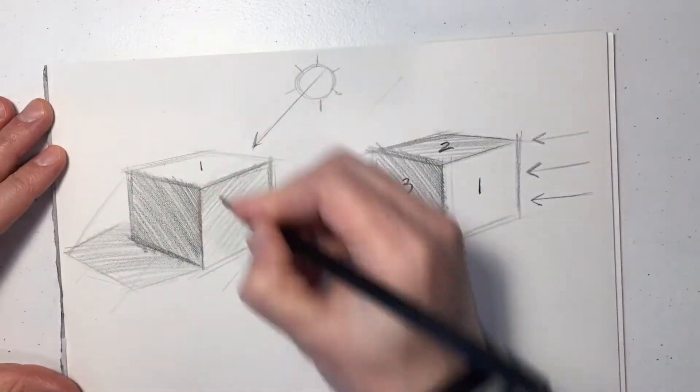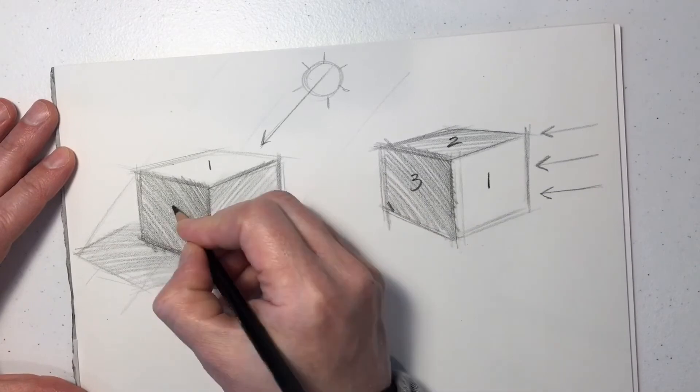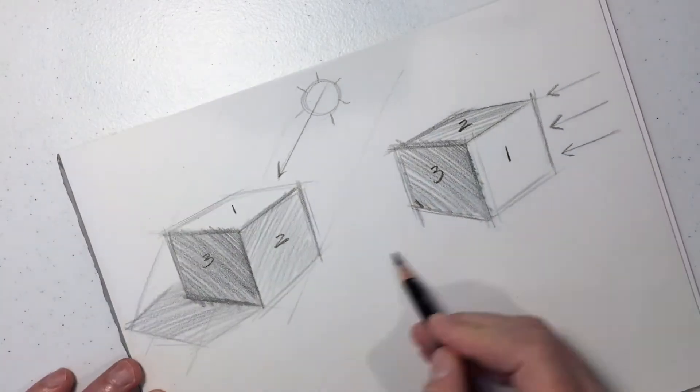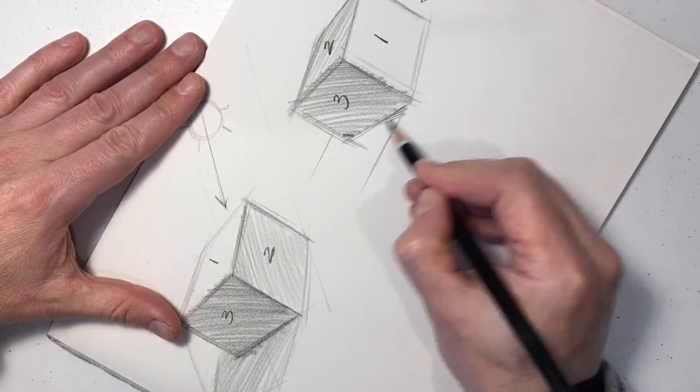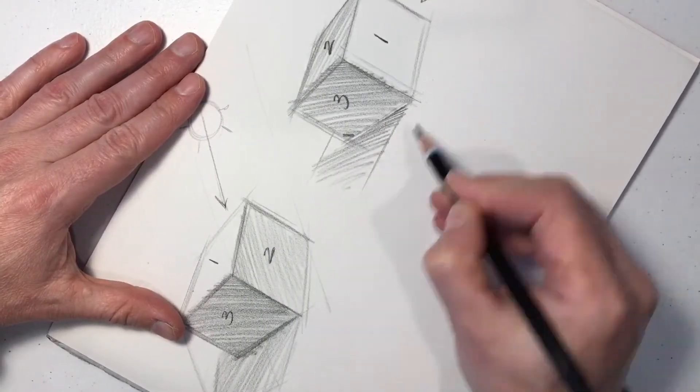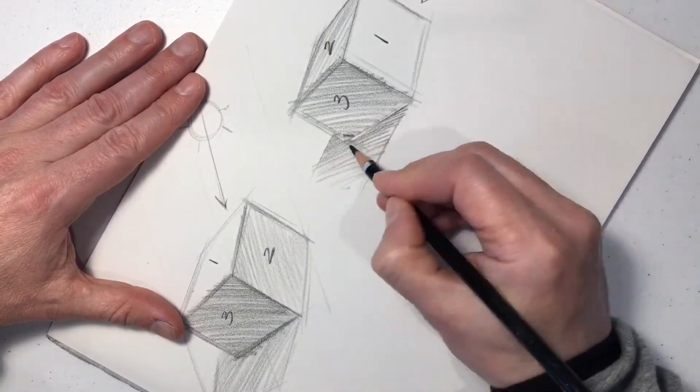And the side to the right will be the brightest. You can see I've numbered the sides. The first side is the brightest. The third side is the darkest. The second one is the in-between.